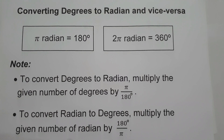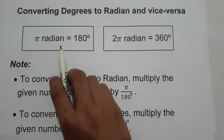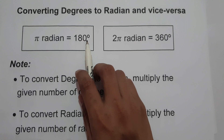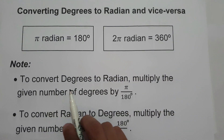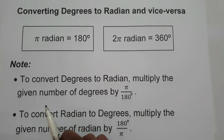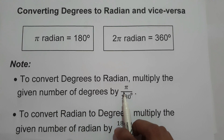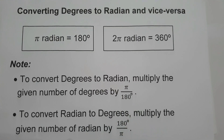For today's video, we are going to talk about how to convert radians to degrees and degrees to radians. In converting, we need to remember that pi radians is equivalent to 180 degrees, and 2 pi radians is 360 degrees. To convert degrees to radians, multiply the given number of degrees by pi over 180. To convert radians to degrees, multiply the given number of radians by 180 degrees over pi.